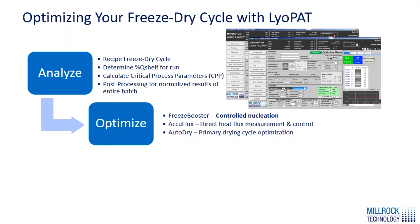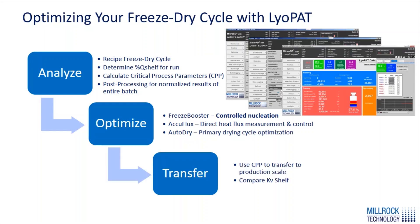Using these three optimization features, we optimize our cycle to develop a better, more uniform cake across the batch and reduce the cycle time as much as possible. Once we have this optimized protocol, we can look to transferring it using the critical process parameters we've calculated, and by comparing the Kv values between various units we're looking to transfer to.